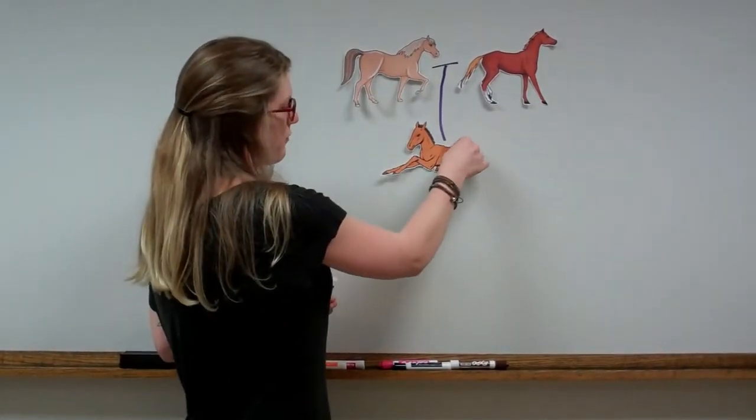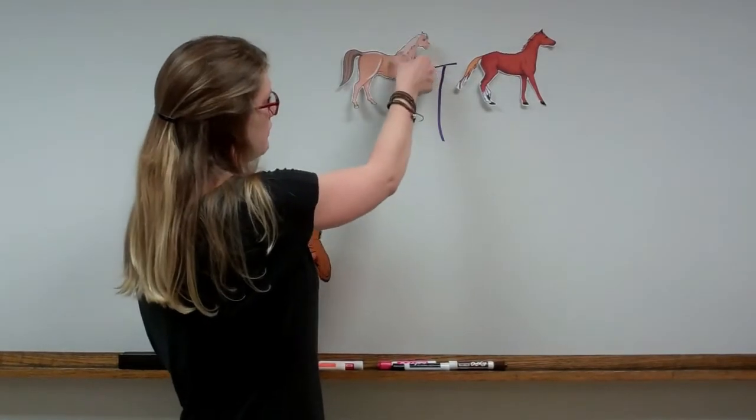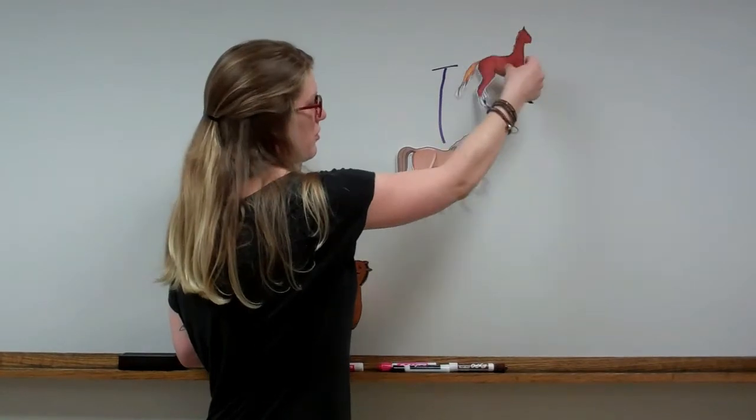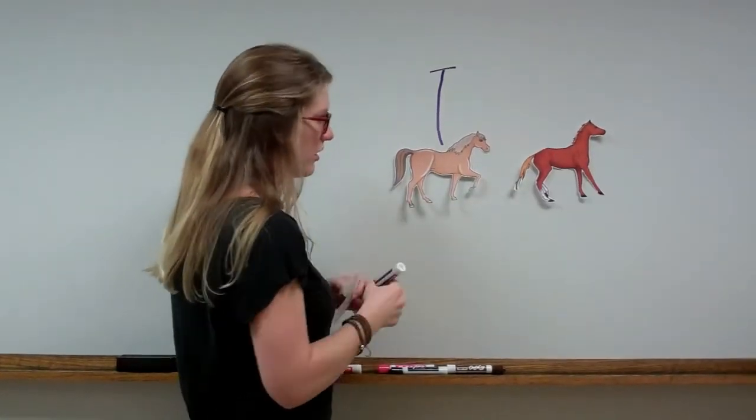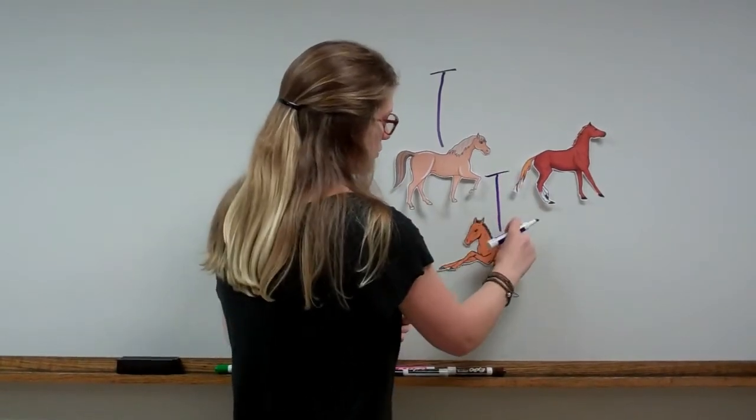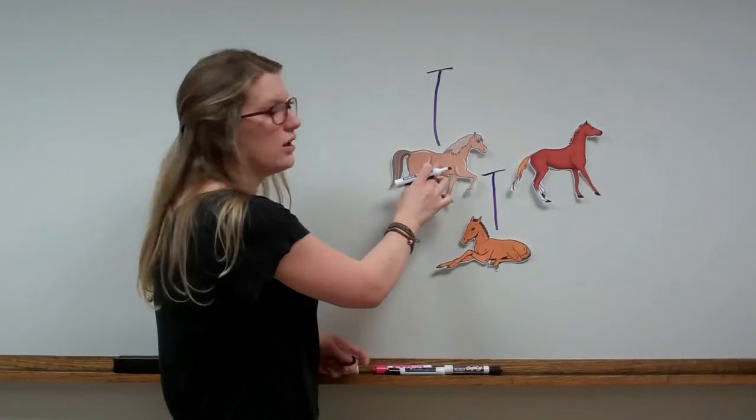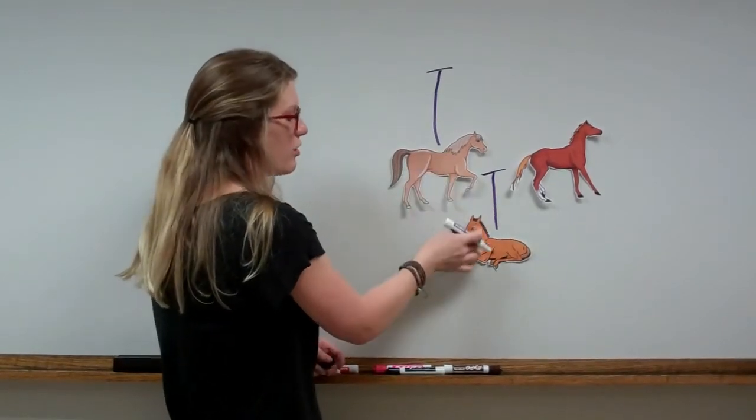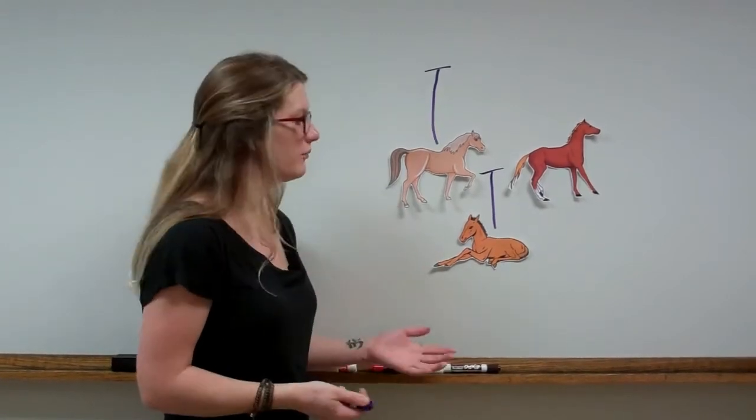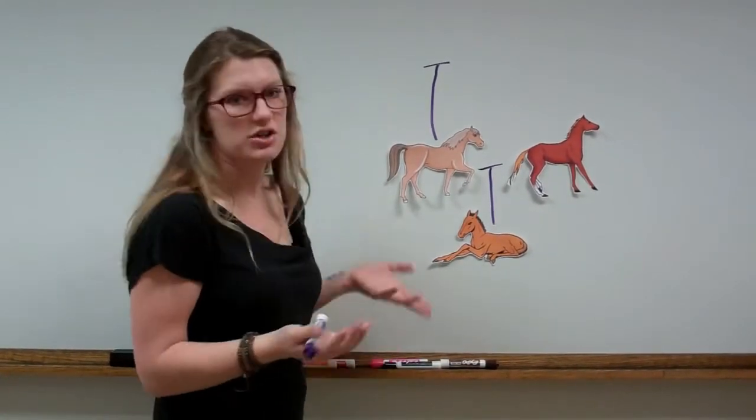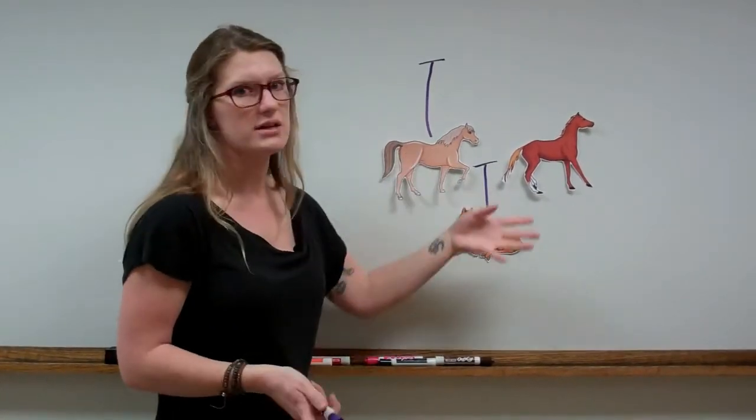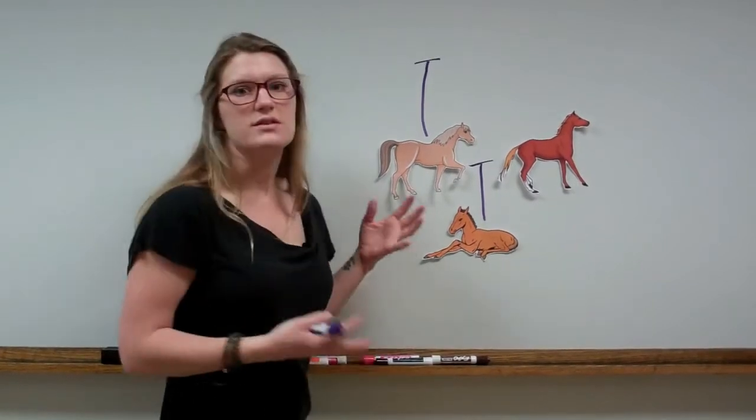Once this baby foal grows up into a female horse herself, she needs to be able to mate with another male horse, and just like her mother, give birth to another baby. So the ability of this offspring to mature and have her own offspring means that she is fertile. She is capable of producing more offspring. And this will proceed for generation after generation.